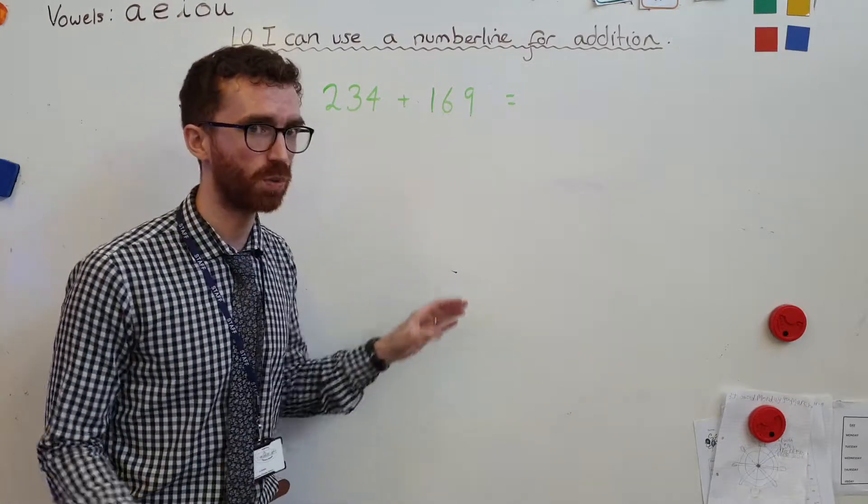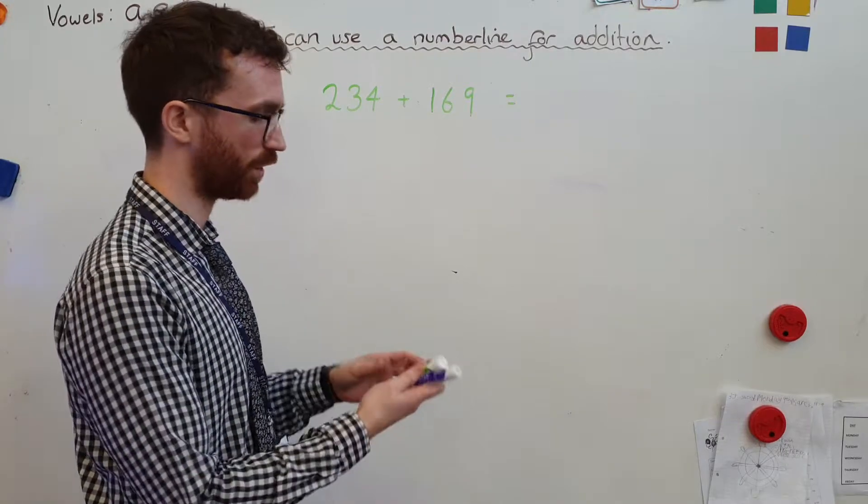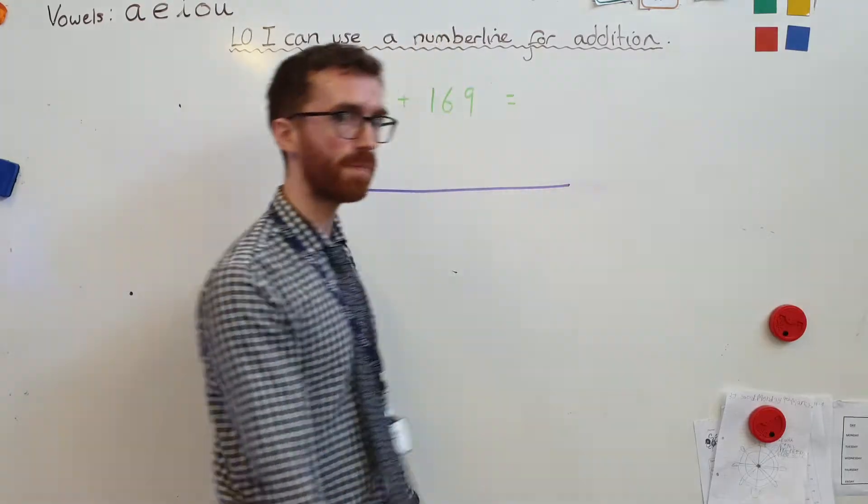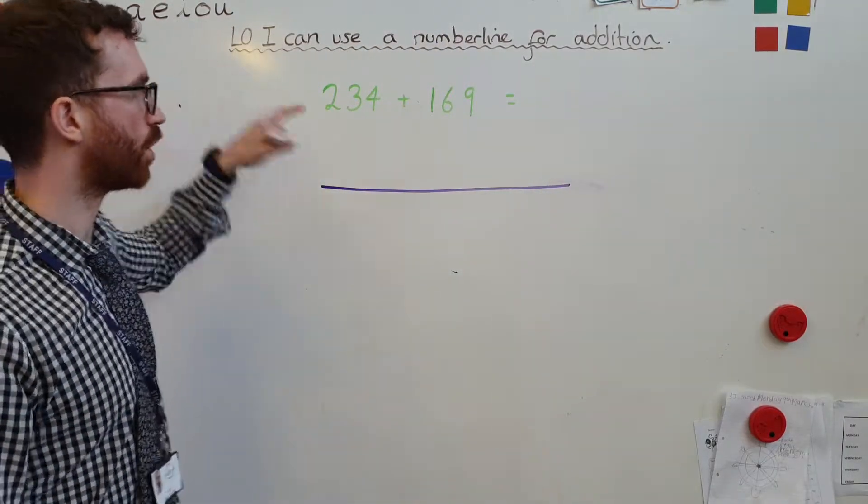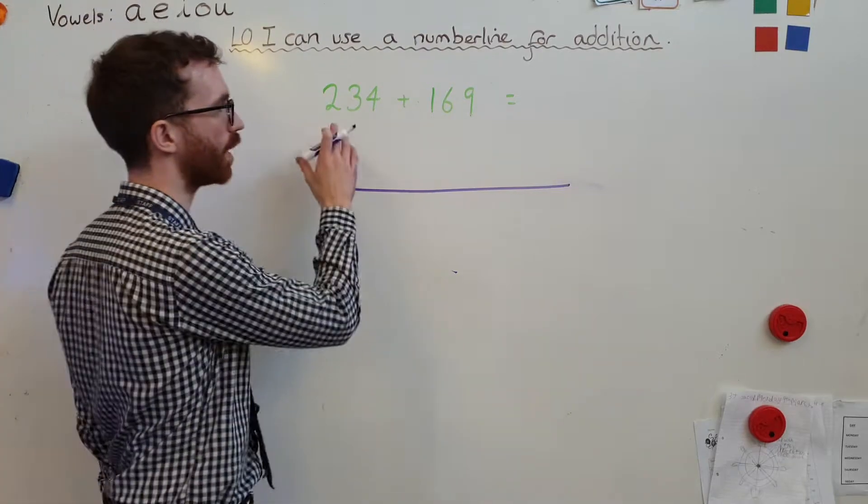Addition is really important, you never know what situation you might find yourself in, you might not have a calculator, so it's a really important skill to get used to. So this is how the number line works. First of all, I need myself a number line. Now I've got to think to myself, I'm adding these numbers on this number line. So which number am I going to start with?